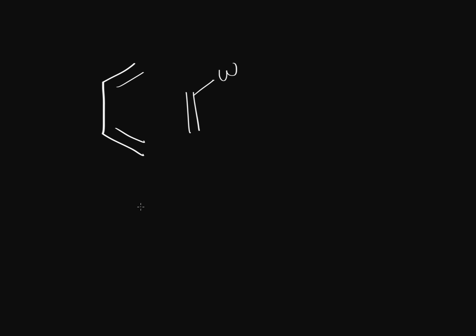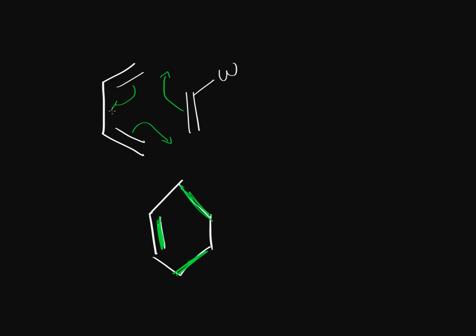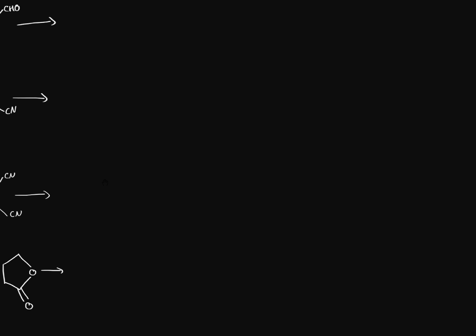We're going to practice some different examples of a Diels-Alder reaction. A Diels-Alder reaction is when you have a diene in its conjugated system and a dienophile with an electron withdrawing group, and when they react together they form a cycloalkene. The new sigma bonds are those two bonds formed from the pi bonds moving over, and this new pi bond is formed from the third pi bond. That's the gist of a Diels-Alder reaction.